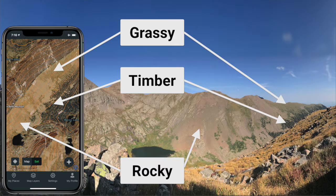So that's all there is to it. Install the app, download an offline map area, then play around with the terrain layers in the Outlay app the next time you're out in the mountains. With some practice, you can quickly learn to identify these physical land features on the topo map. I'll see you out there!